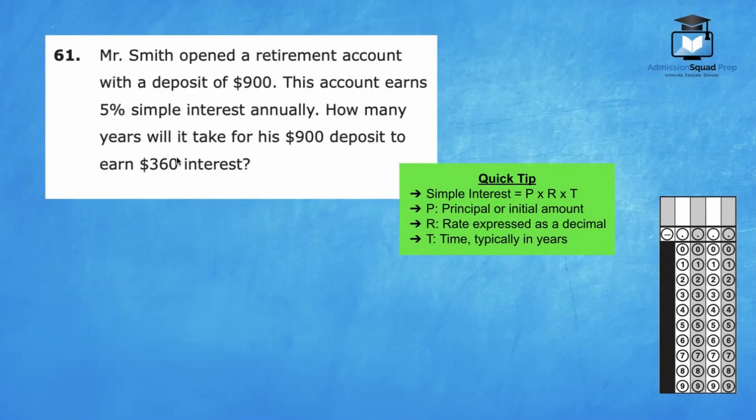Number 61. Mr. Smith opened a retirement account with a deposit of $900. This account earns 5% simple interest annually. How many years will it take for his $900 deposit to earn $360 in interest? The simple interest formula is I equals P times R times T. Simple interest is the principal times the rate times the time.